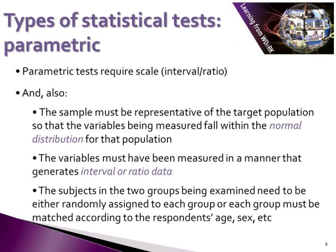Parametric tests can be applied to interval and ratio data — what we call scale data — that is normally distributed. However, a fuller set of rules apply to the distribution of data in order to use parametric statistical tests. The sample must be representative of the target population so that the variables being measured fall within the normal distribution for that population, meaning random selection must have occurred. The variables must have been measured in a manner that generates interval or ratio data. And the subjects in the two groups being examined need to be either randomly assigned to each group, or each group must be matched according to respondents' age, gender, and so forth.